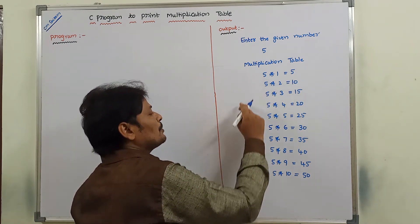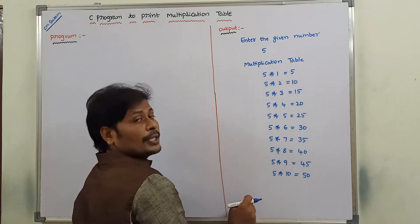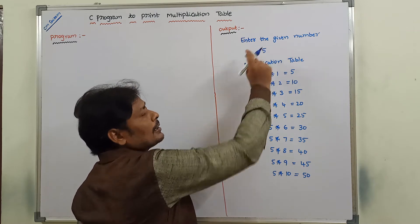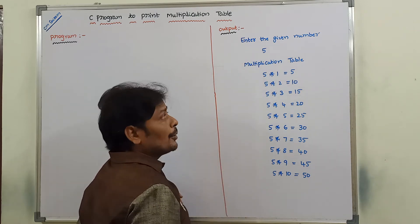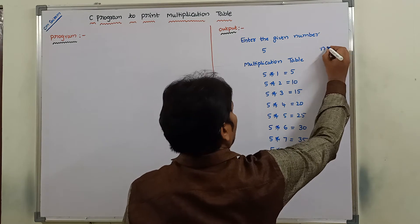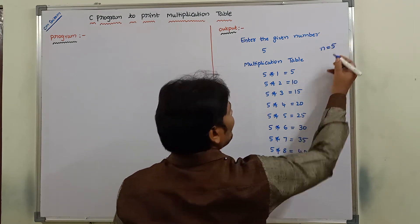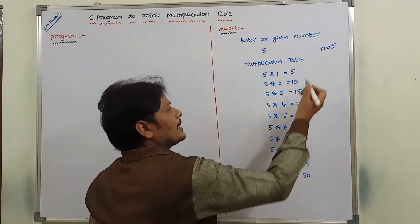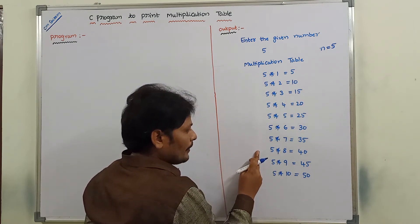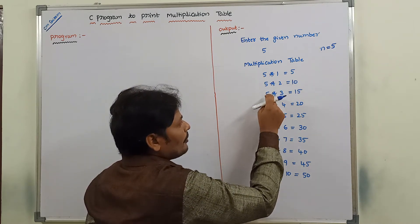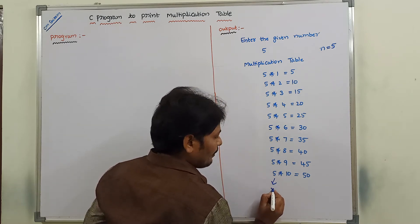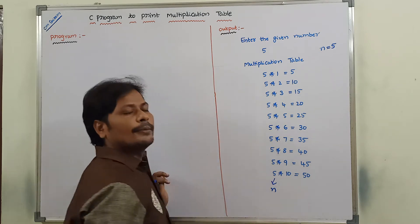By observing this multiplication table, whatever number is read from the keyboard, that number can be taken as n. So n is equal to 5 — this 5 is fixed. This is variable n.